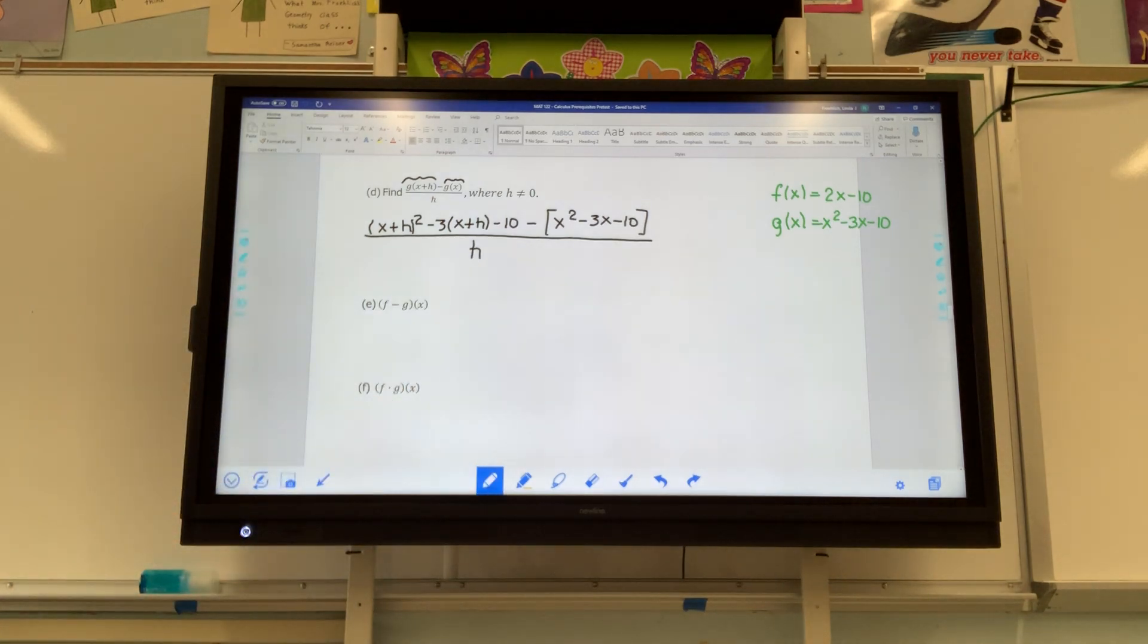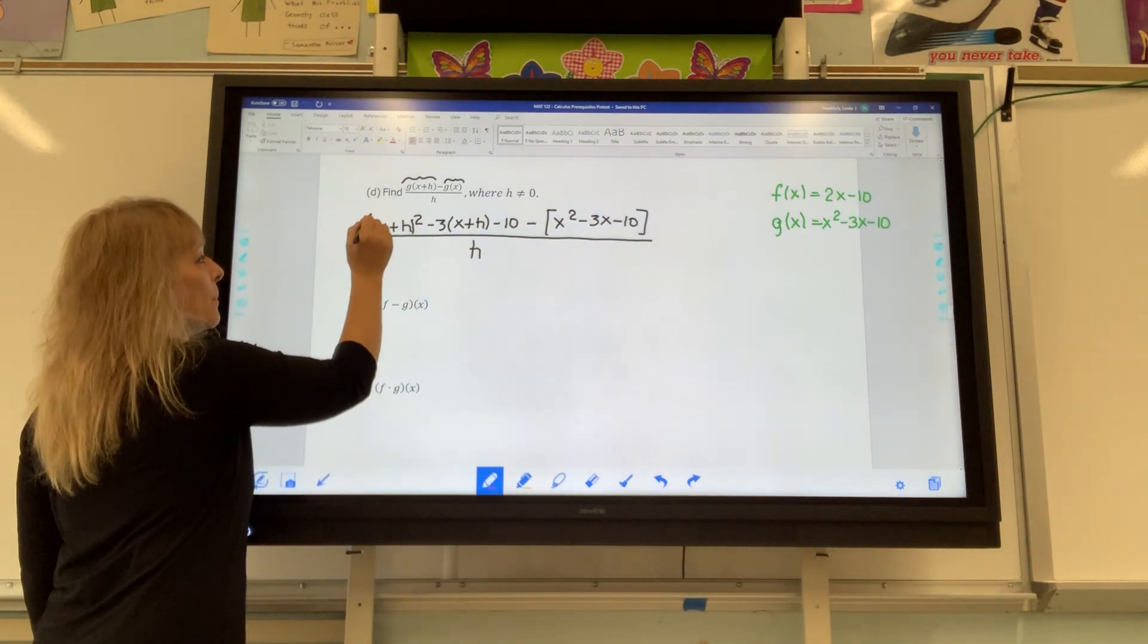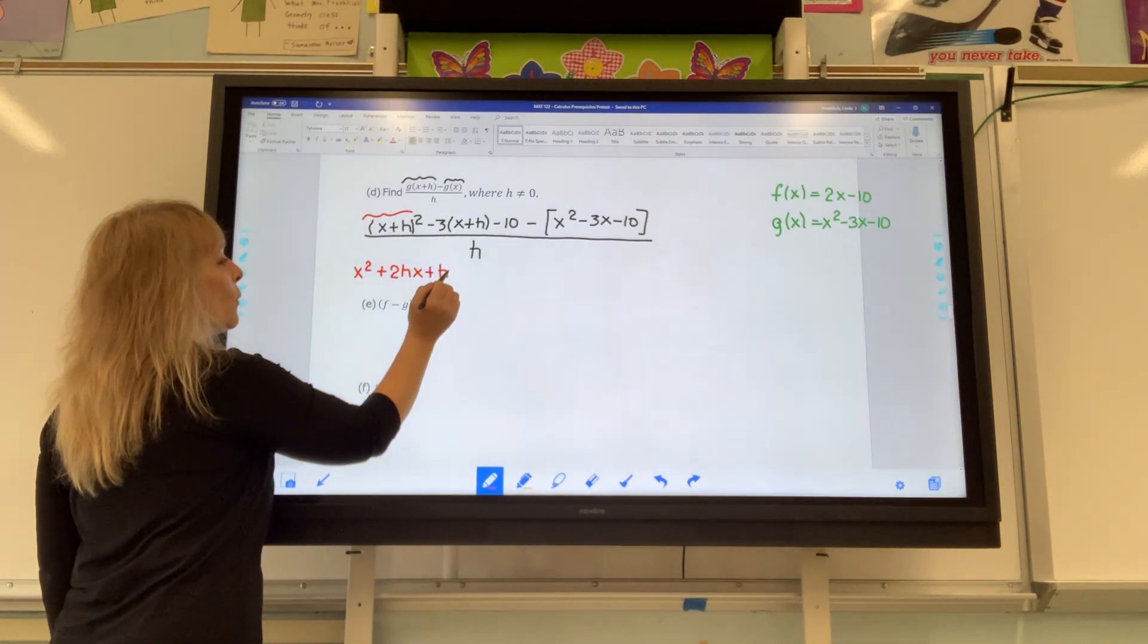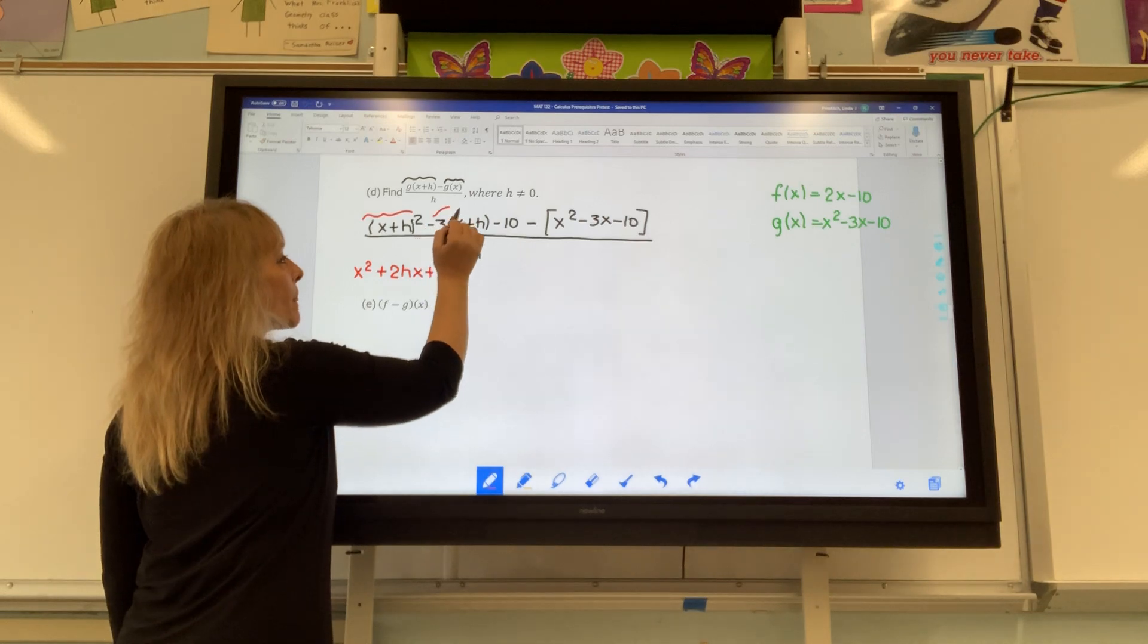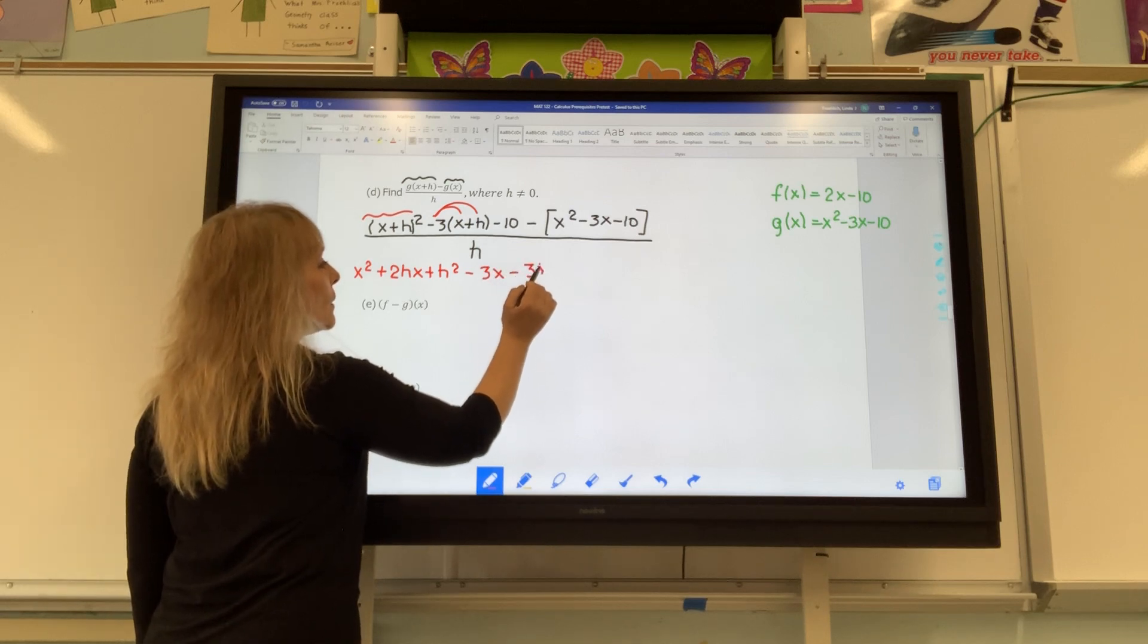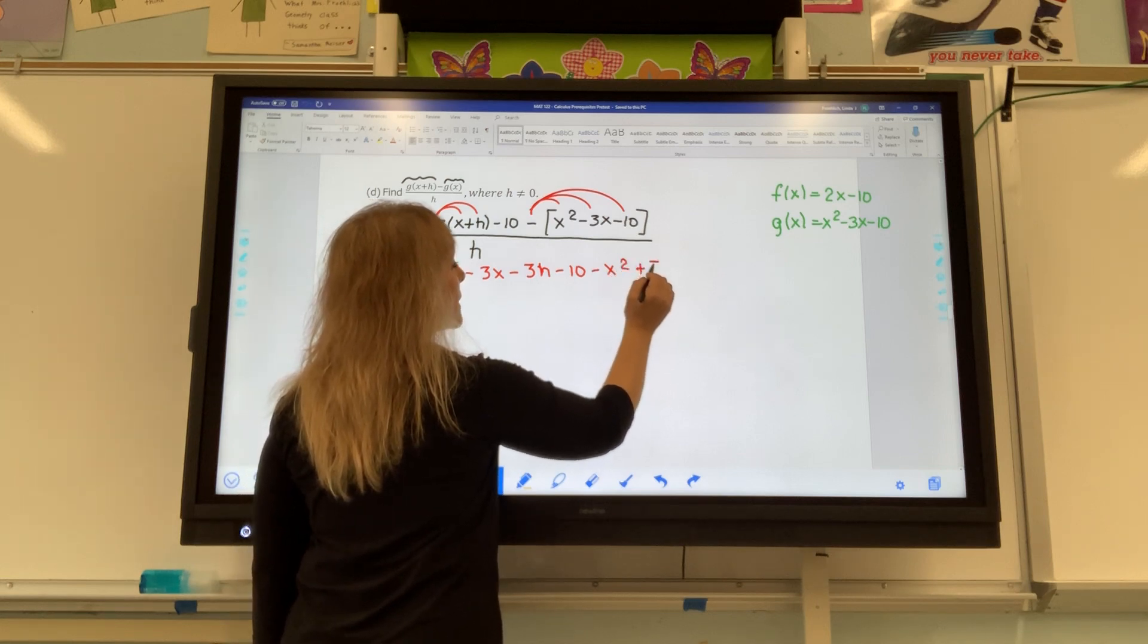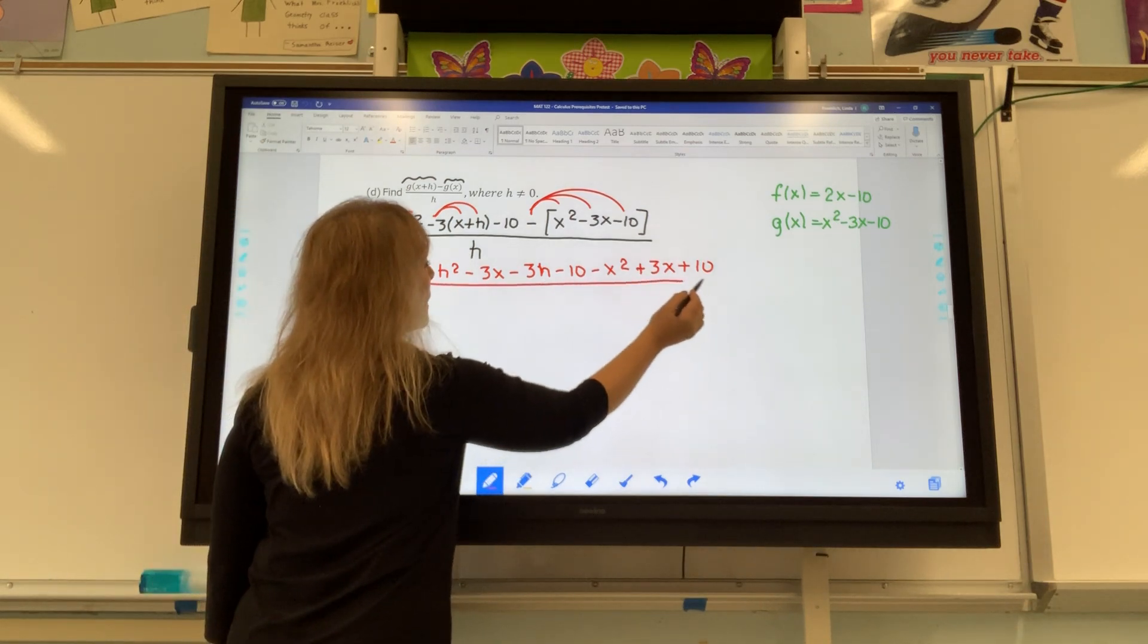Now, if you need to actually write out the first expression twice, please do so. When I multiply this out, you get x squared plus 2hx plus h squared. If I went too quickly, please write it out twice and multiply it. So, negative 3x, negative 3h minus 10. Make sure you distribute the negative throughout. So it's negative x squared, positive 3x, and positive 10. In the end, you are still dividing that entire thing by the letter h.